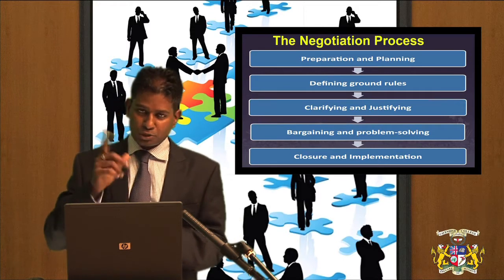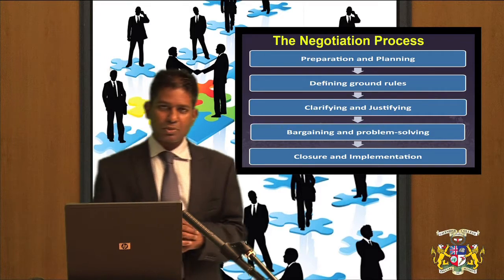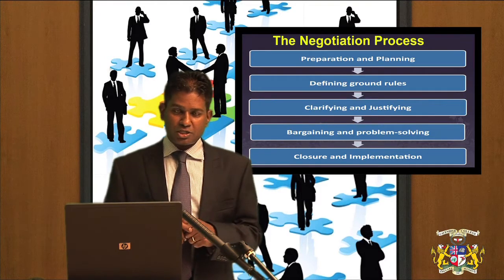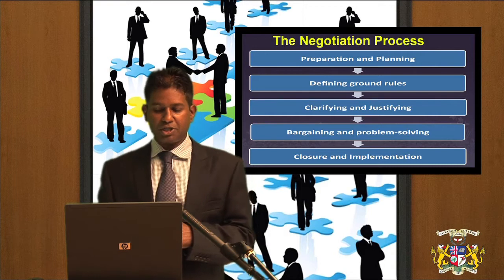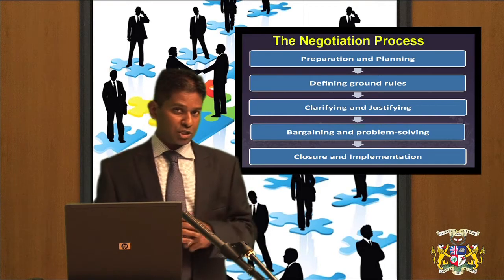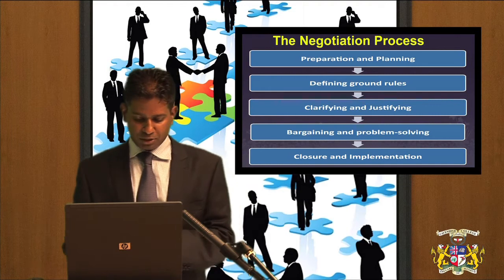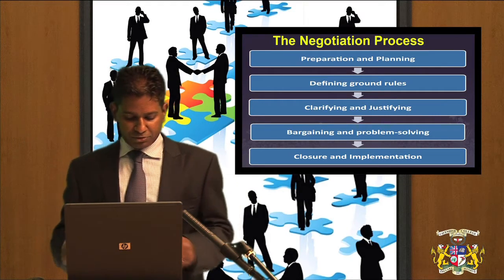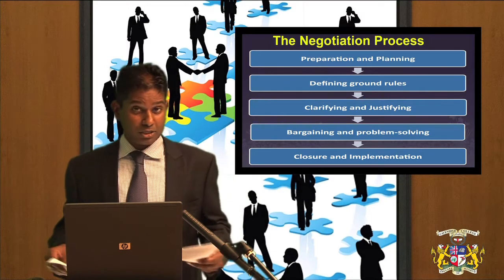It's important to define the ground rules. The third stage is clarifying and justifying. The fourth stage is bargaining and problem solving. And finally, the fifth stage is closure and implementation.